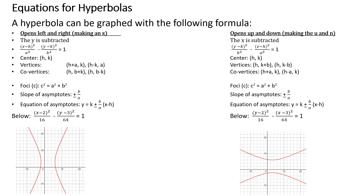H and K form the center point — H being the horizontal center, K the vertical. The horizontal axis is A and the vertical axis is B, just as with an ellipse. If the hyperbola opens to the right and left, the X term is first and we subtract Y from X, giving us that left-right opening shape.